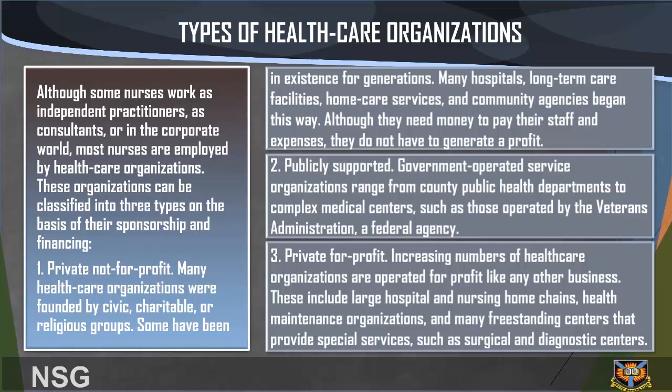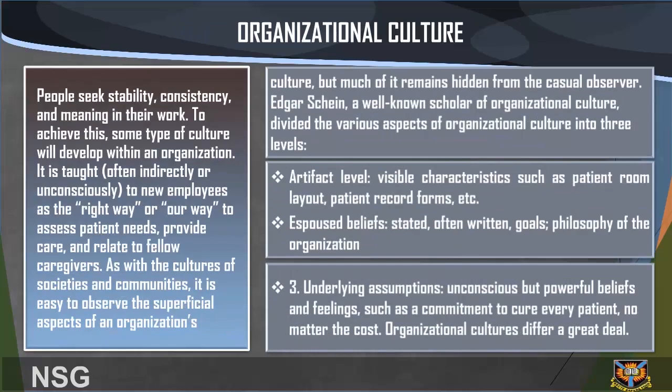The third type is private for-profit. Increasing numbers of healthcare organizations are operated for profit like any other business. These include large hospitals and nursing home chains, health maintenance organizations, and many free-standing centers that provide special services, such as surgical and diagnostic centers.